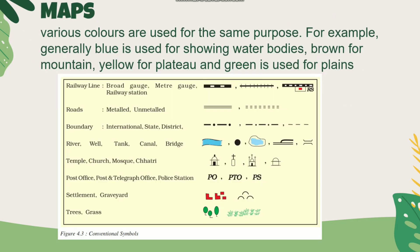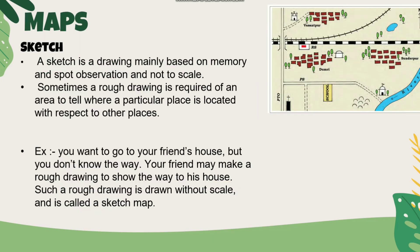We also have conventional symbols, which means internationally agreed symbols. These include pictures for railway lines, roads — metal and non-metal — boundaries such as state boundary, international boundary, and district boundary, as well as rivers, wells, tanks, mosques, churches, and temples.